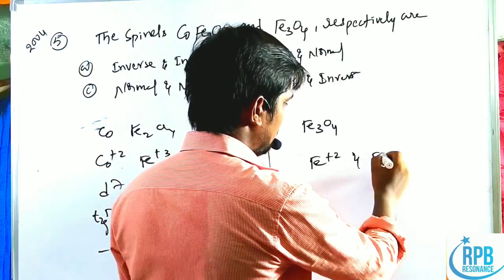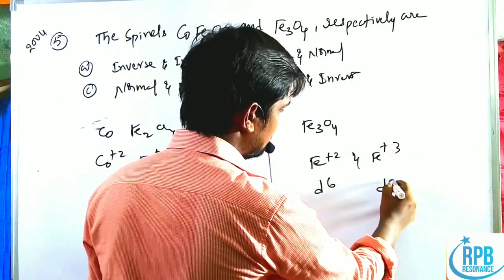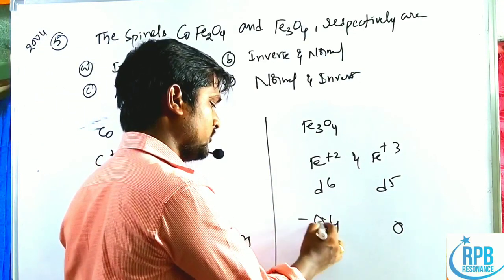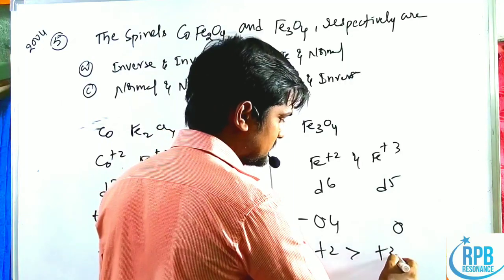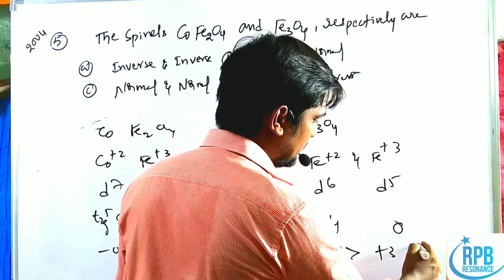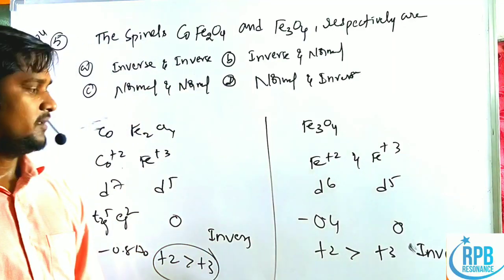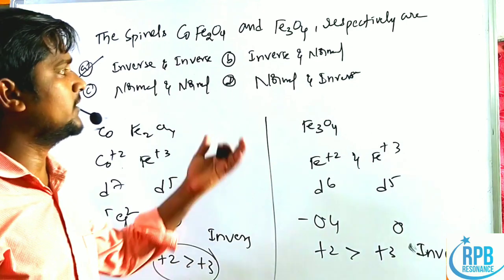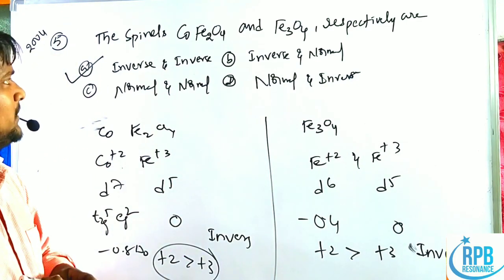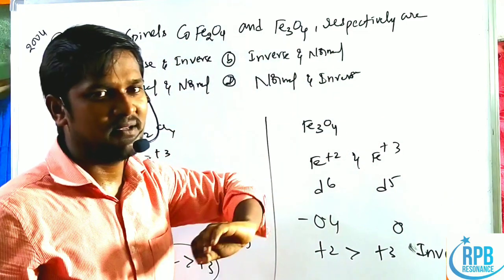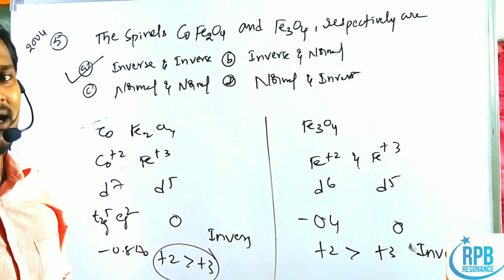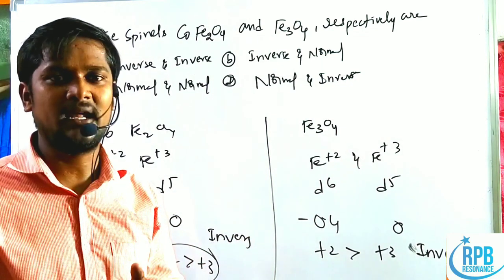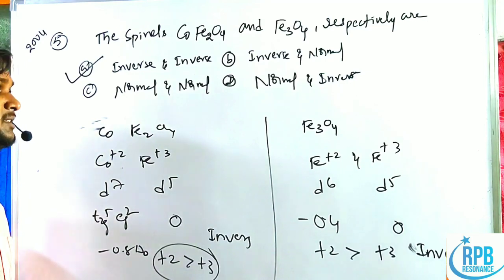For Fe₃O₄: Fe²⁺ is d⁶ (CFSE = −0.4 ΔO); Fe³⁺ is d⁵ (CFSE = 0). Since A²⁺ CFSE > B³⁺ CFSE, Fe₃O₄ is also an inverse spinal. Both are inverse spinels, so option A is correct. Note: except zinc, all AFe₂O₄ complexes are inverse spinels; Mg and Mn act as mixed spinels.